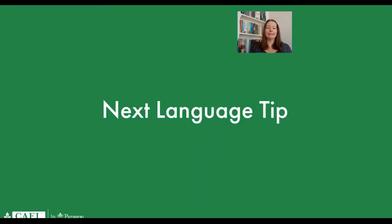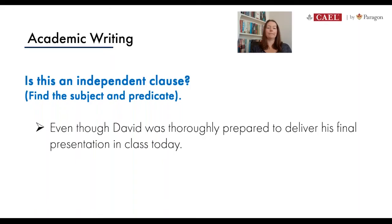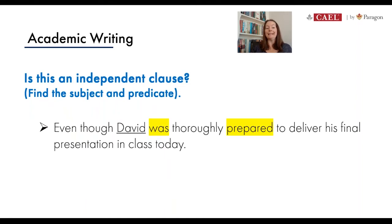Now let's move on to today's new content. I have a clause on the screen, and I'm going to ask whether it is an independent clause. The idea reads: 'Even though David was thoroughly prepared to deliver his final presentation in class today.' To check if it's independent and can stand by itself, we need to identify the subject and predicate. The subject is David, the verb — highlighted yellow — is 'was prepared,' and most of the words tell us what David is doing.